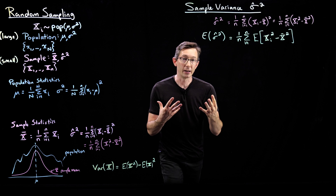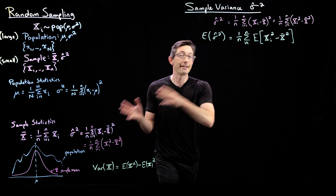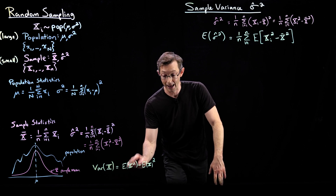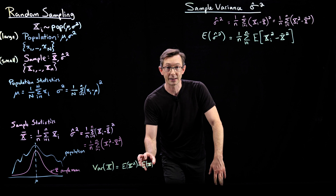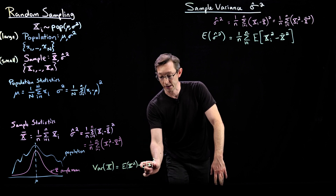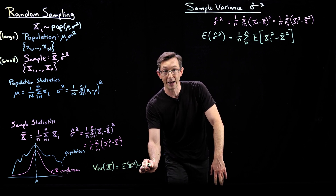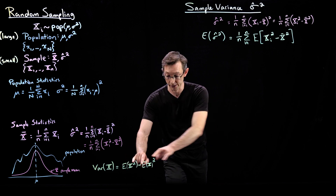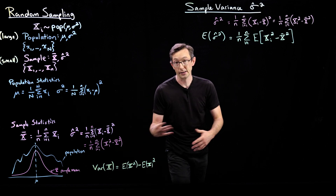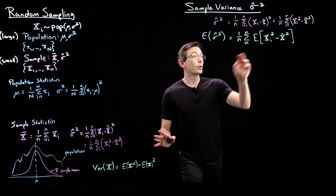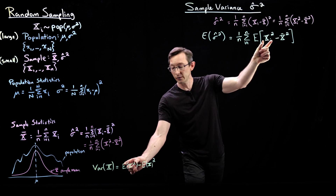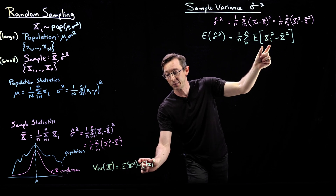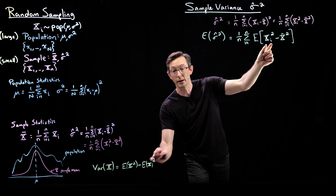I can write this as the expected value of x_i squared minus the expected value of x-bar squared. We'll use the variance identity: the variance of a random variable x equals the expectation of x squared minus the expected value of x, quantity squared. So the expected value of x squared equals variance of x plus (E[x]) squared. Each expected-value-of-x-squared term gets rewritten that way.